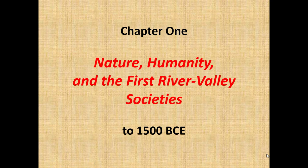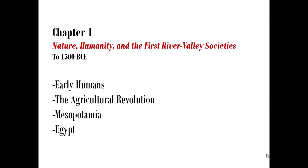Chapter 1: Nature, Humanity, and the First River Valley Societies. The era we're looking at is from the emergence of human beings to 1500 BCE — not CE, not 600 years ago, but roughly 3,700 years ago. The main points of this chapter are early humans, the Agricultural Revolution, Mesopotamia, and Egypt.